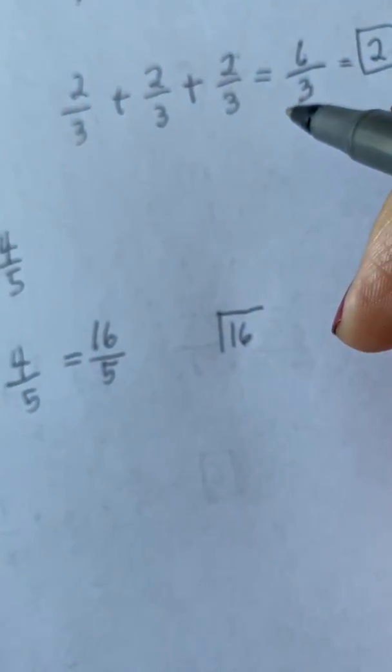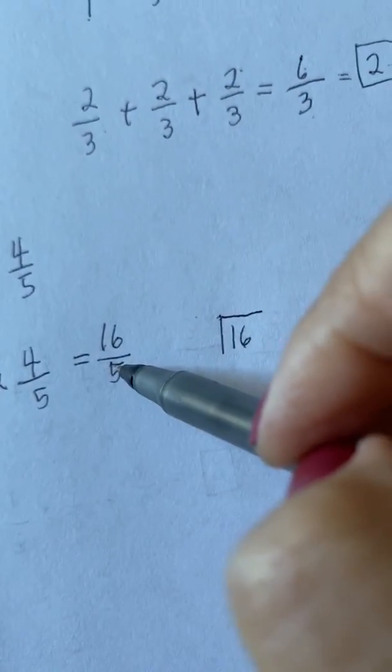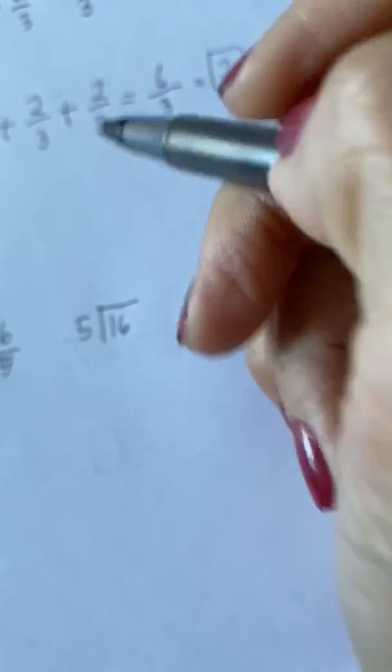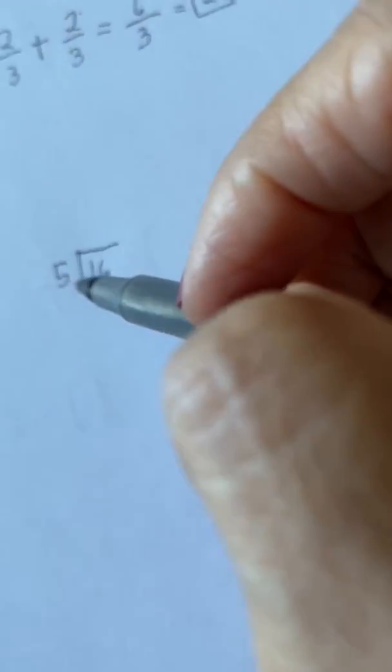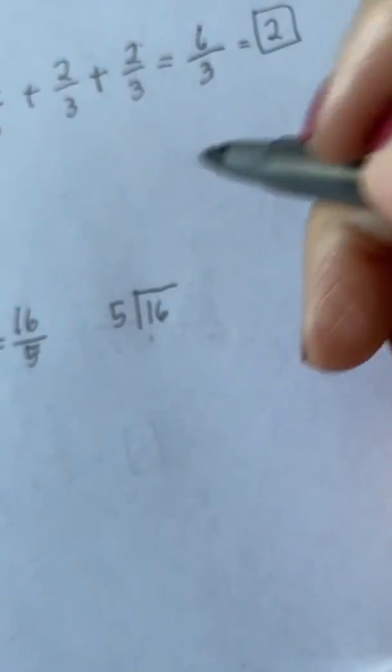So your 16, which is the numerator, will become the dividend. And 5, which is your denominator, will become your divisor. Don't switch the two numbers. It won't work. So 16 divided by 5 is equal to 3.